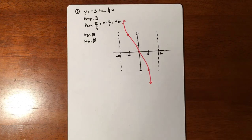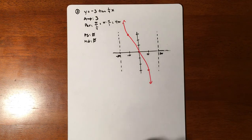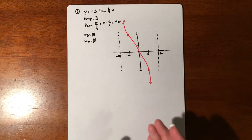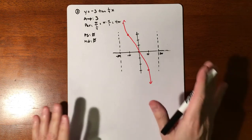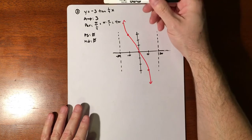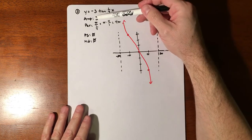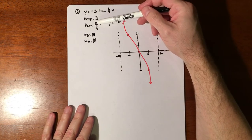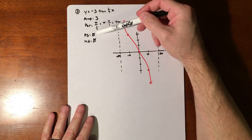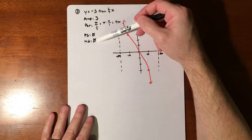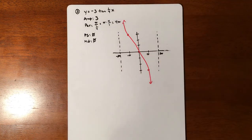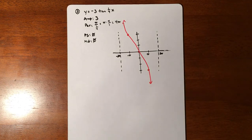Alright, so that was the first two examples — that's part one. We'll do another part that includes a cotangent graph and a tangent graph that has everything: not just amplitude and period, but also phase shifts and midlines all thrown together. That'll be on the next one.